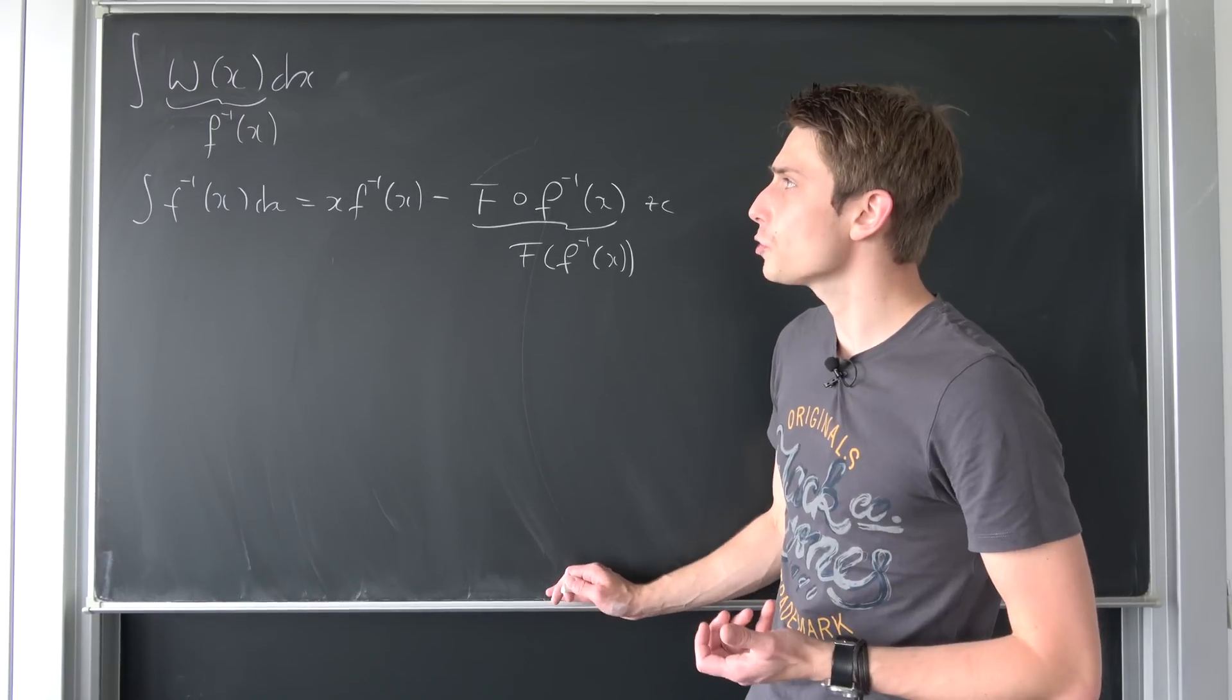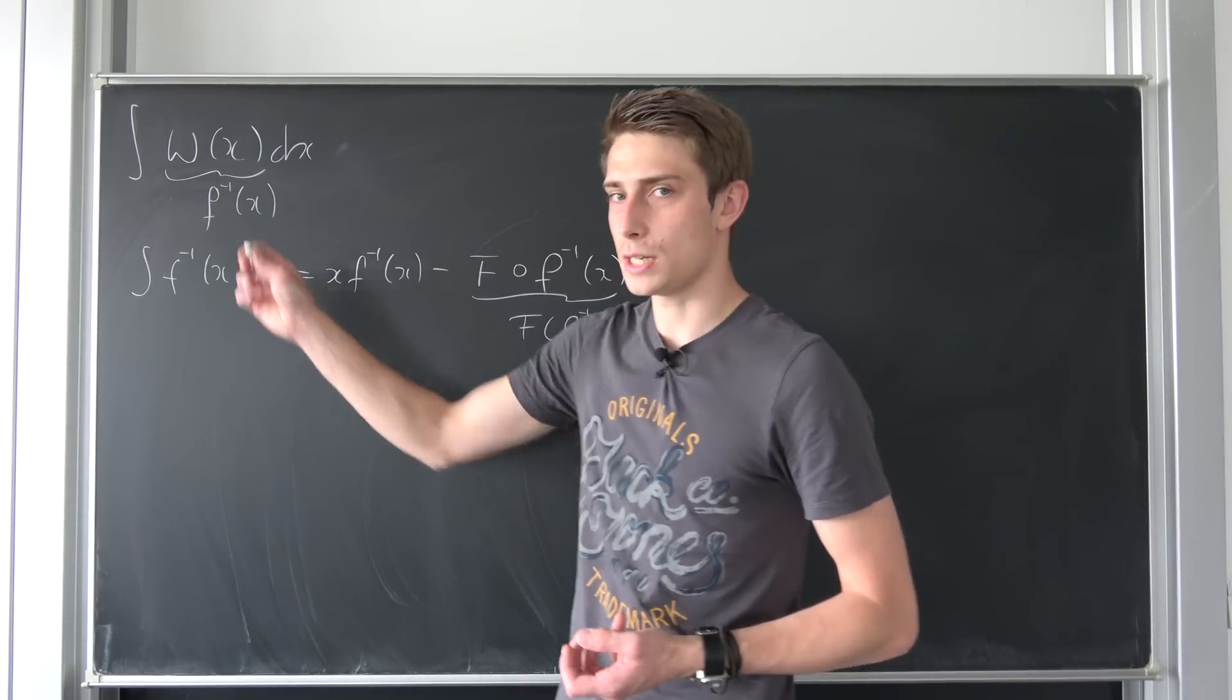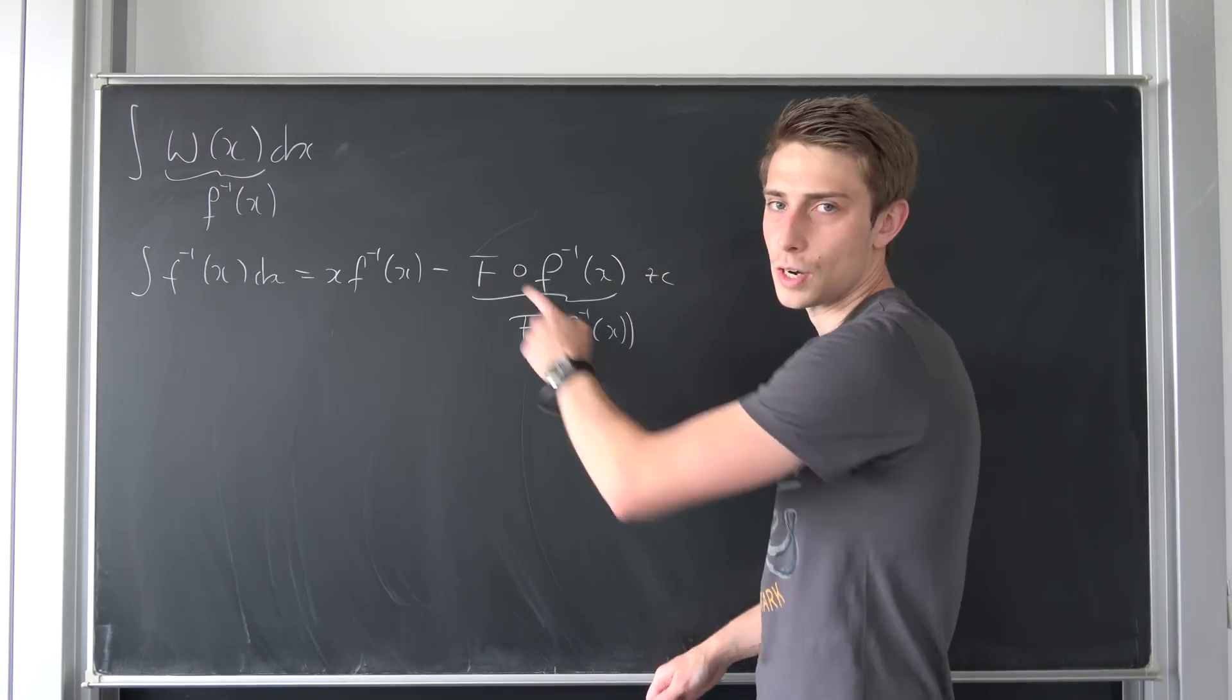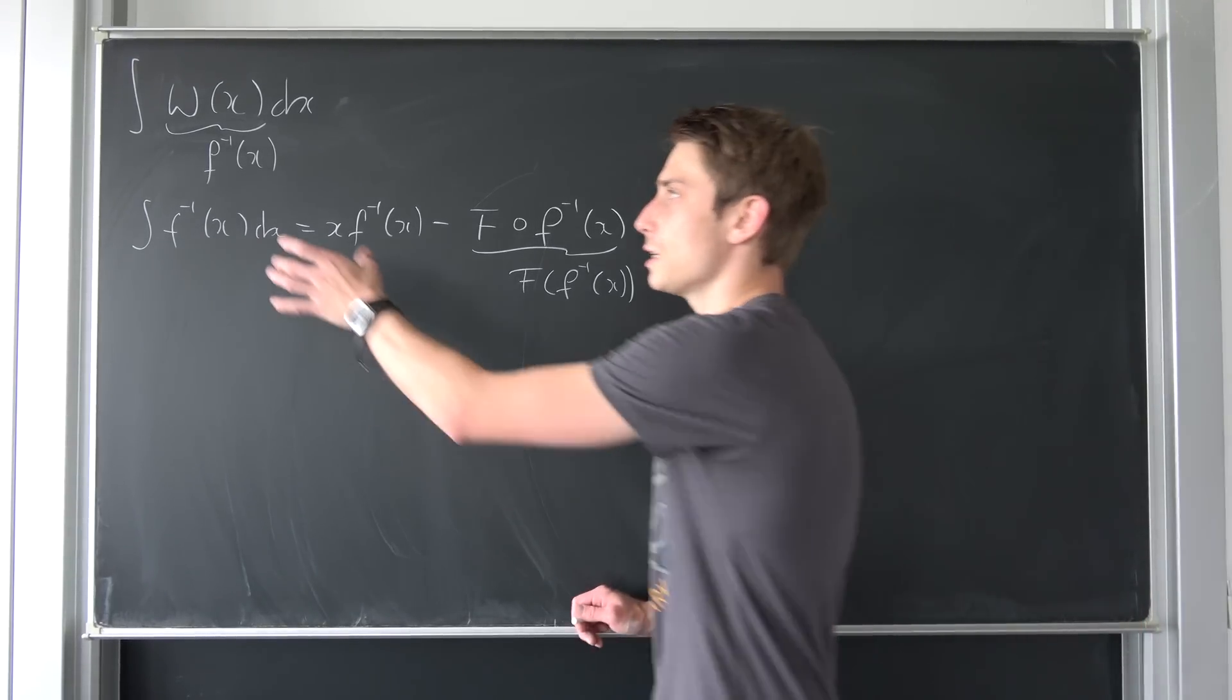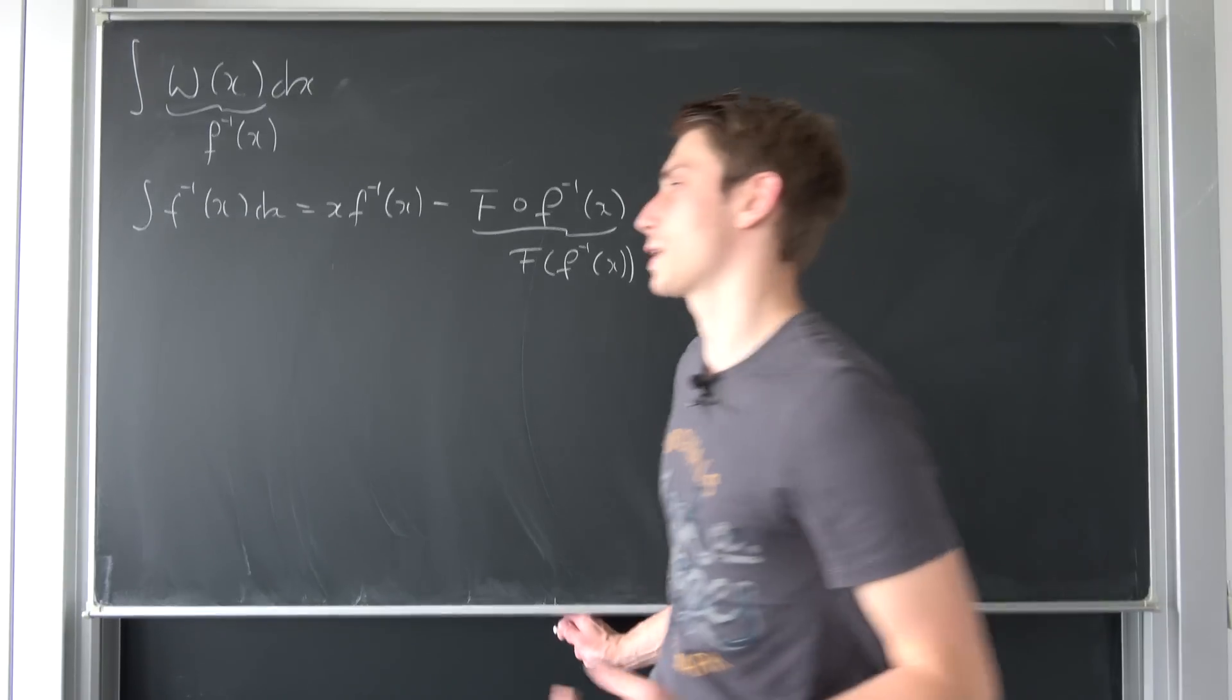Okay. We nearly have all the tools that we need to integrate this right here. All that's really missing is the inverse function of the inverse function and then taking the integral of that thing. So what exactly is the inverse function of Lambert of x?